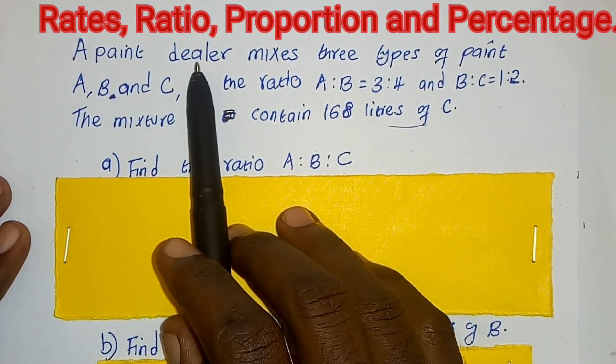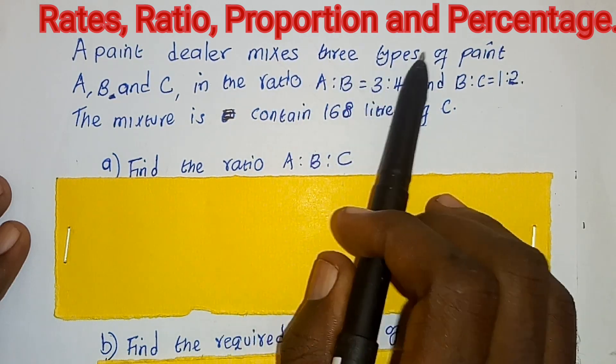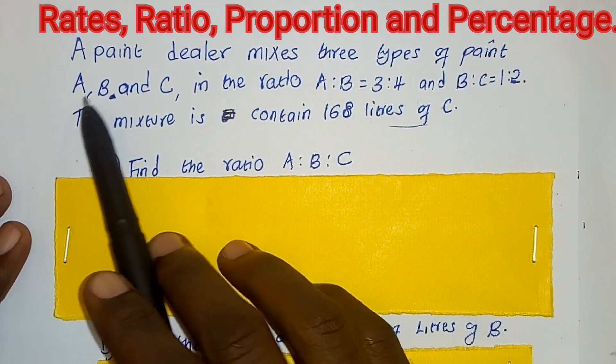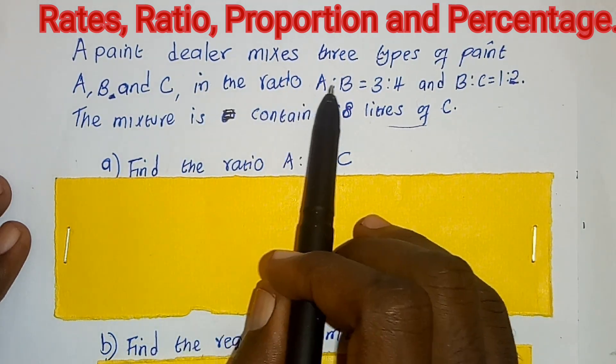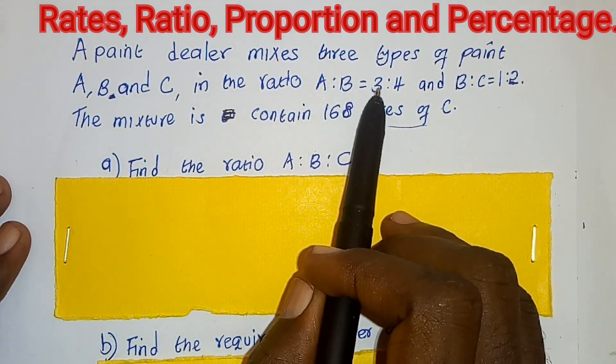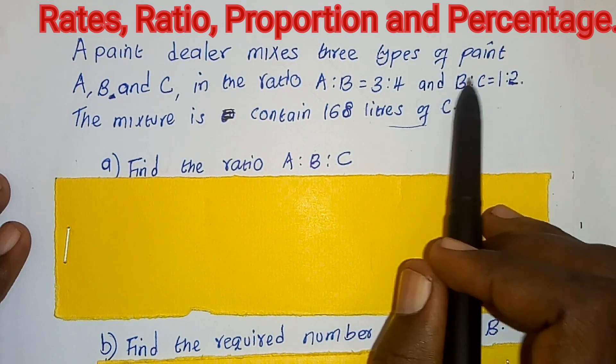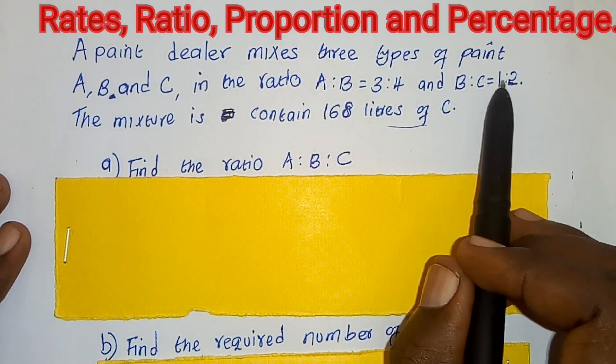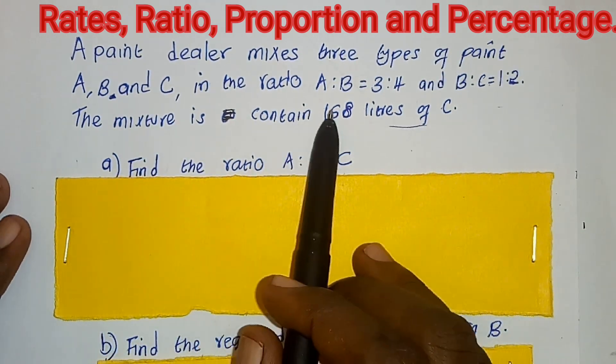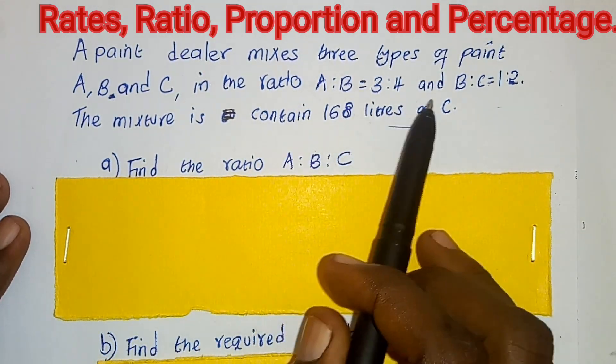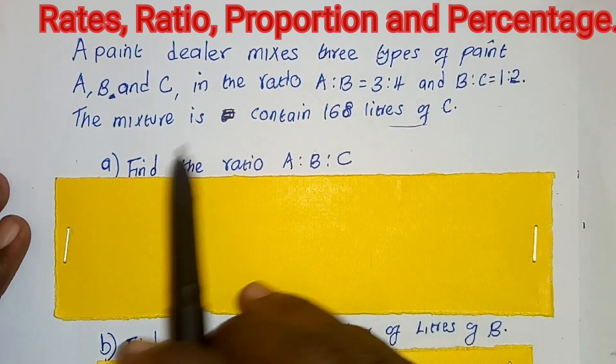A paint dealer mixes three types of paint, A, B, and C, in the ratio A is to B which is equal to 3 is to 4, and B to C which is equal to 1 is to 2. The mixture contains 168 liters of C. Question A: Find the ratio A is to B is to C.